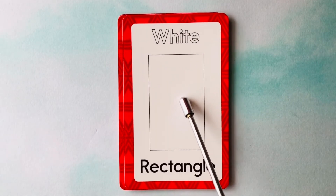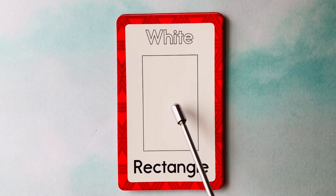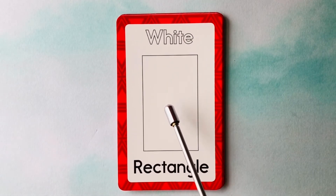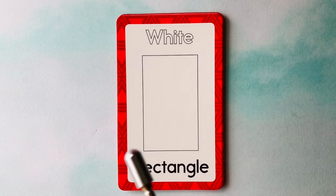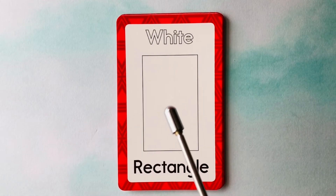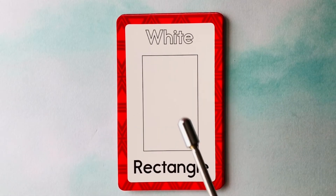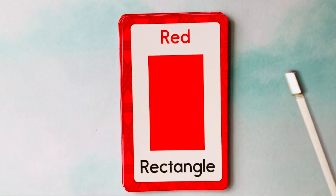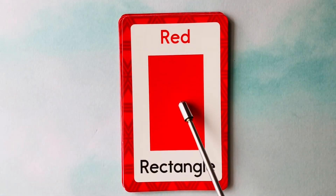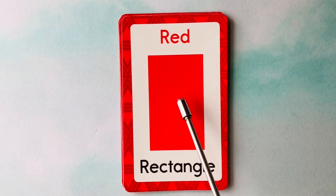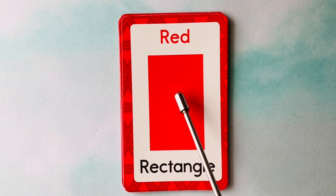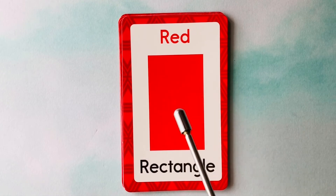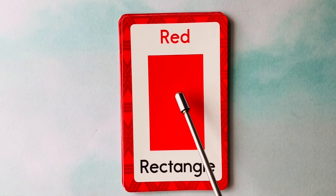This is a rectangle. What color is this rectangle? It's a white rectangle. This is also a rectangle. What color is this rectangle? It's a red rectangle. This is a red rectangle.